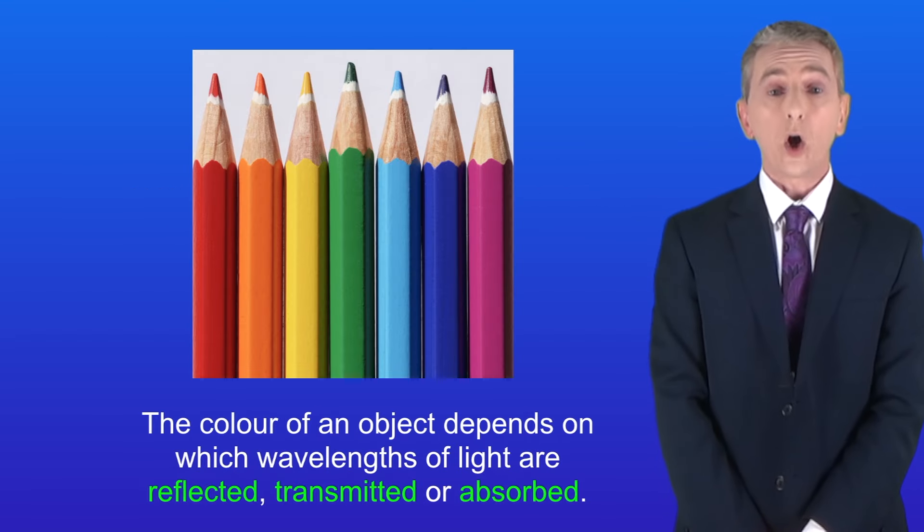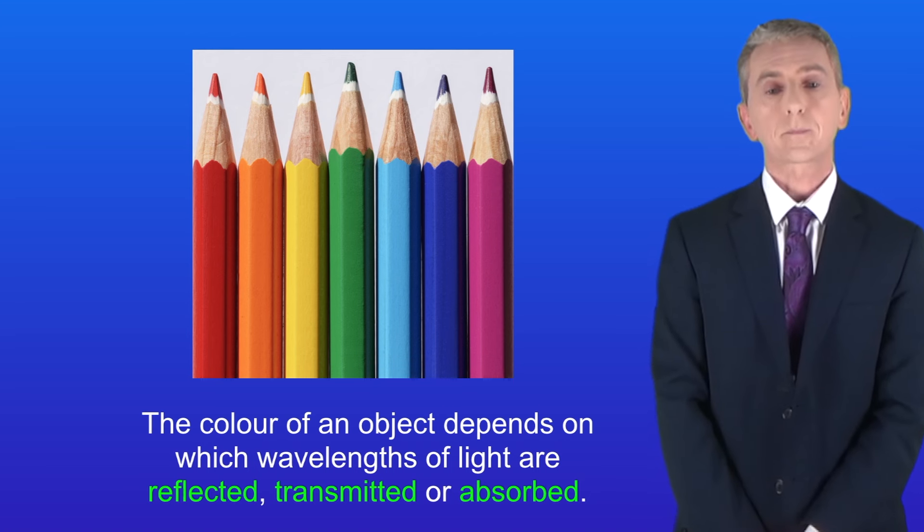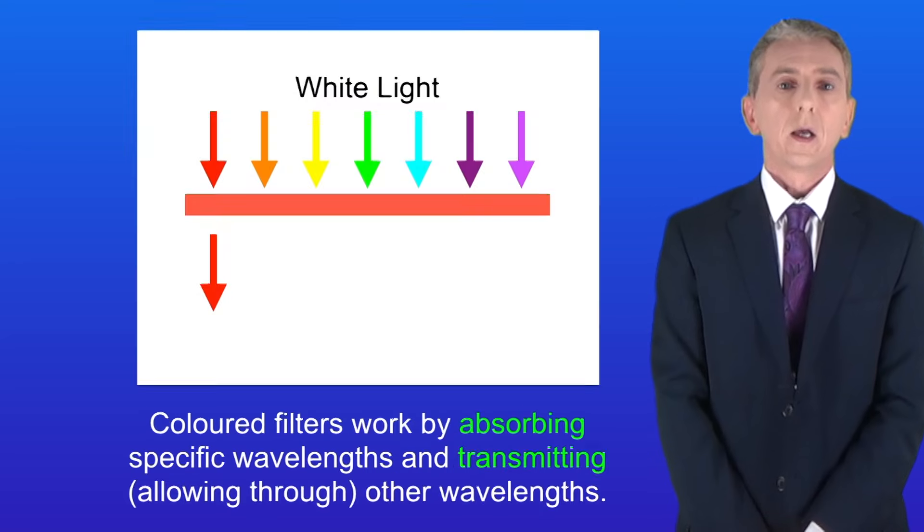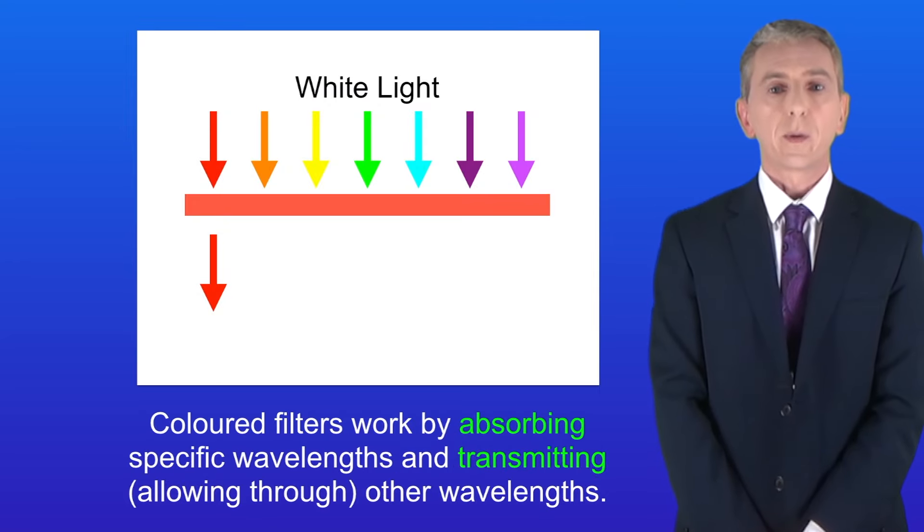The color of an object depends on which wavelengths of light are reflected, transmitted or absorbed. We're going to start by looking at colored filters. Colored filters work by absorbing specific wavelengths and transmitting, in other words allowing through, other wavelengths.